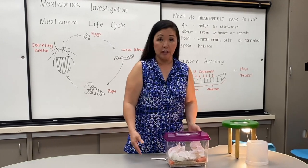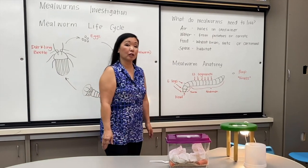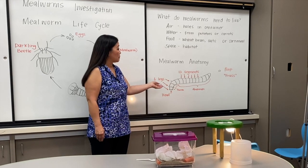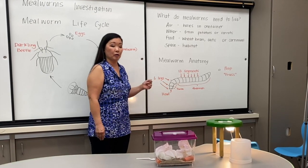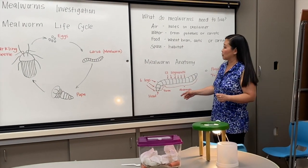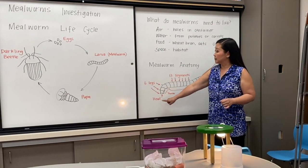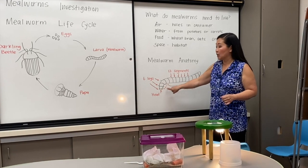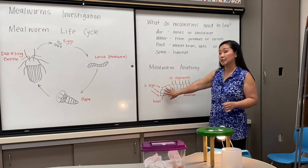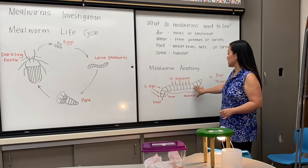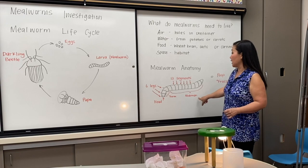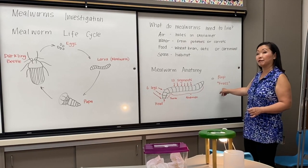This is their little habitat. Mealworm anatomy is simple. They're actually not really a worm — they're a larva — but because they look like worms, we call them mealworms. They have a head. They have six legs, only in the thorax region, which is the first three segments of the body. And then the last nine segments is called the abdomen. And their poop is called frass.